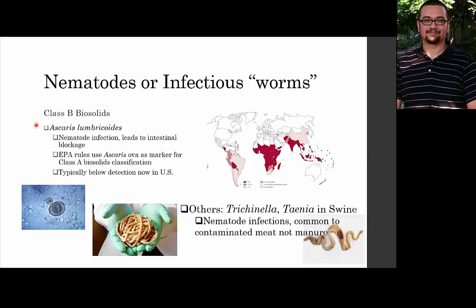Nematodes and infectious worms: the reason I include these is simply because the EPA still uses Helminth ova as a metric to determine whether you have quality Class A biosolids treatment processes — they look for the absence of these ova in Class A biosolids. For the most part, and you can see from the worldwide distribution, we don't really see Ascaris infections in this country, though you do see them worldwide in other countries.